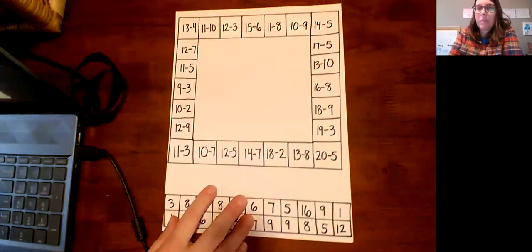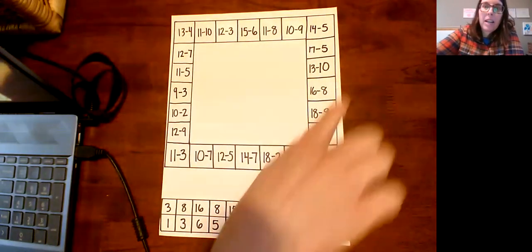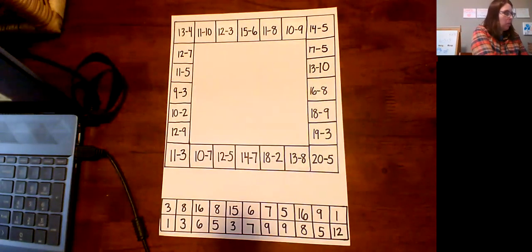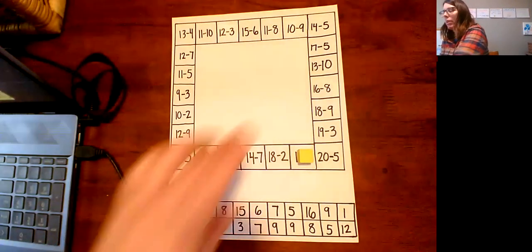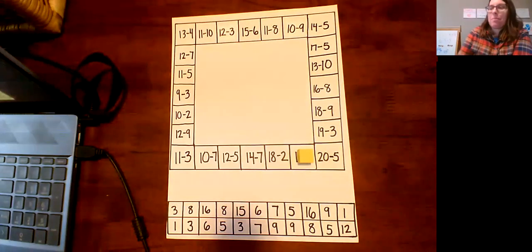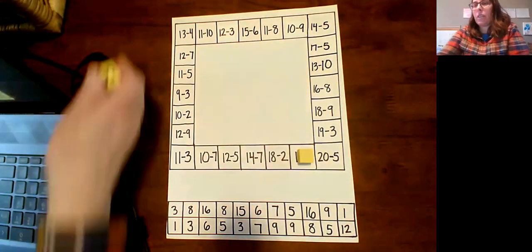Okay, now let me show you what we're doing today. I call it Around the Board, like subtraction around the board. So your paper looks like this and we're moving around the board. You need like a cube or something to use as your playing piece.